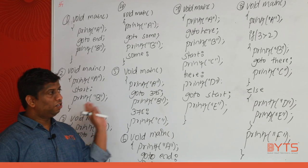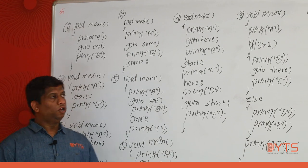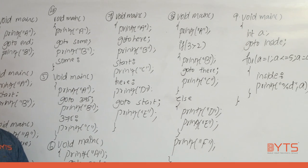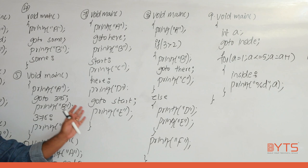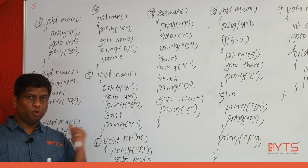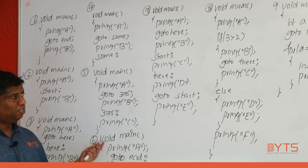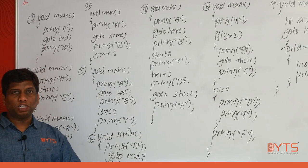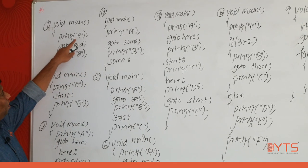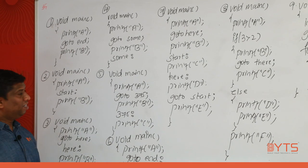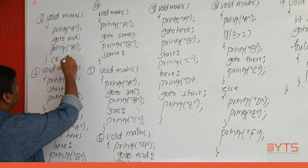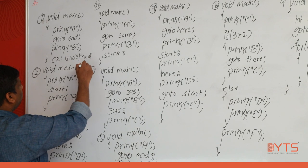There are 10 examples to review. Pause the video and try to guess the outputs yourself — practice is important for placements. In the first example, printf A then goto end, but there is no label 'end' defined. This gives a compilation error: undefined label 'end'.